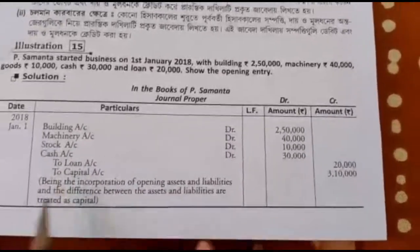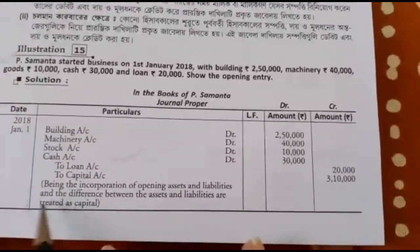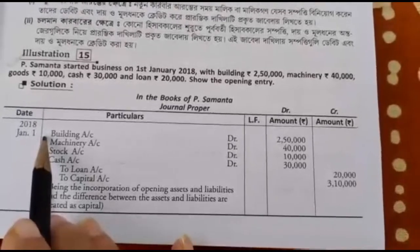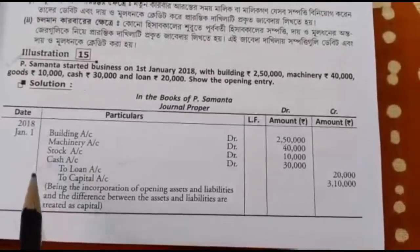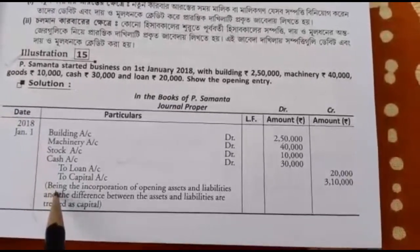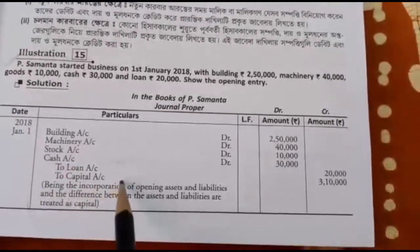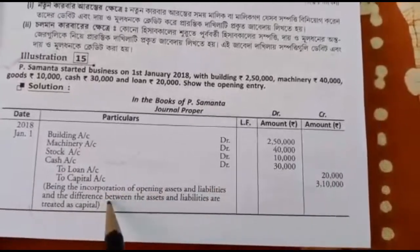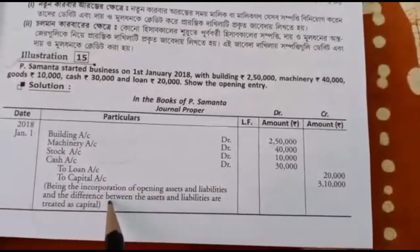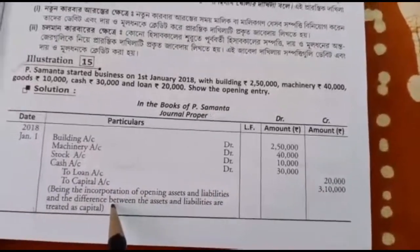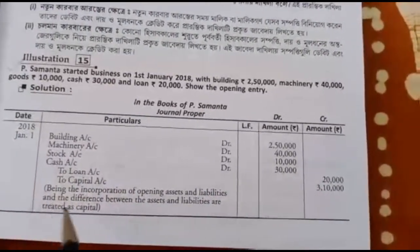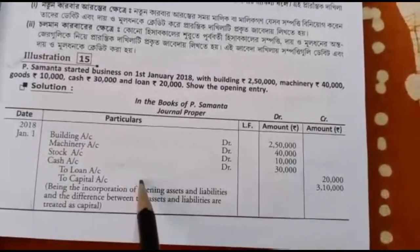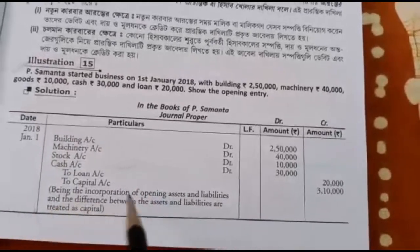When you start with the assets and liabilities, those are the opening entries.